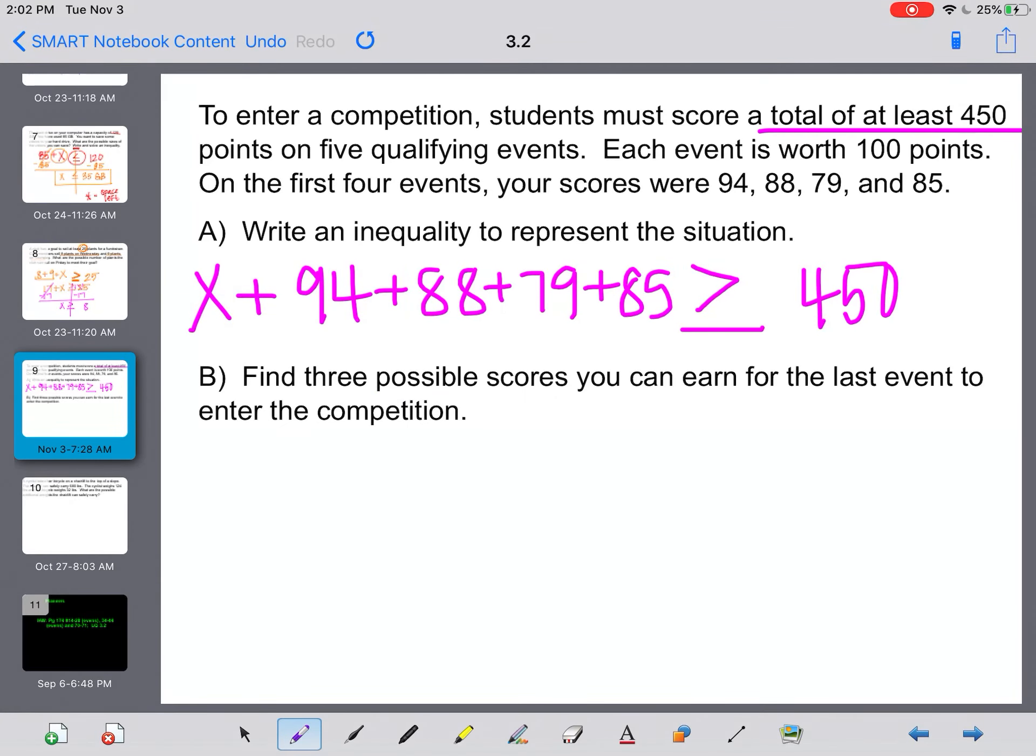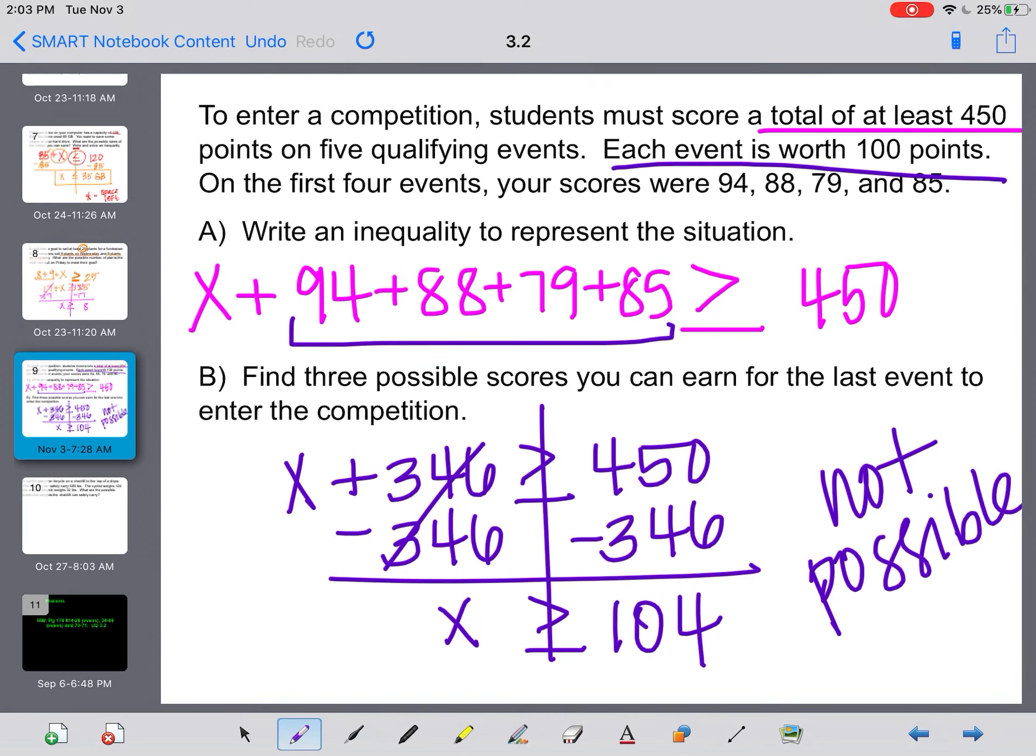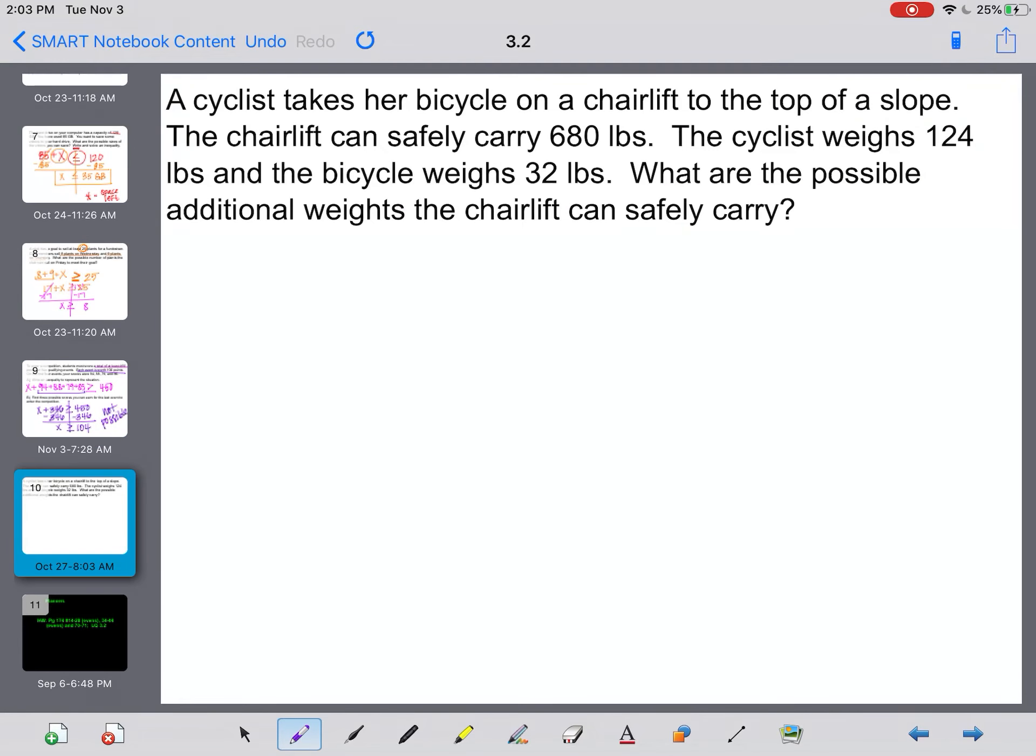Okay. Now we need to find three possible scores. So I'm going to start solving this by adding up all of those numbers that we've already scored. And when I add all those together, I get 346. So I really have x plus 346 is greater than or equal to 450. To get x by itself, I subtract 346. That means x, or our score on our fifth event, has to be greater than or equal to 104. Now they want three possible scores that we could score, but if I need 104 and each event is only worth 100, this is not possible. I can't score 104 or more.